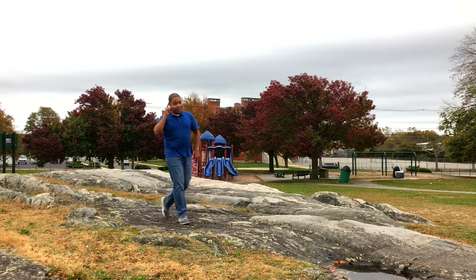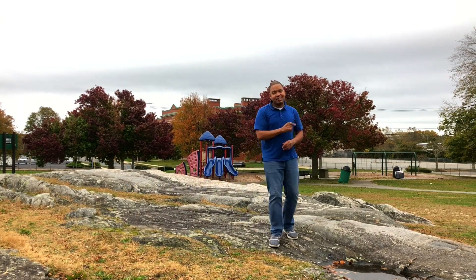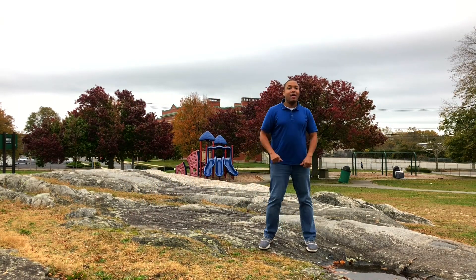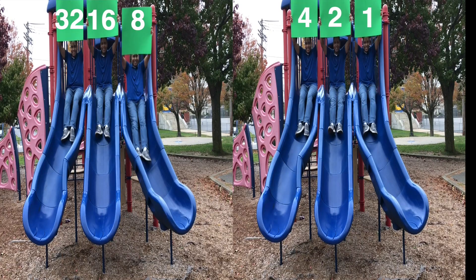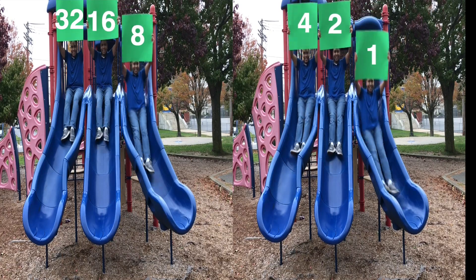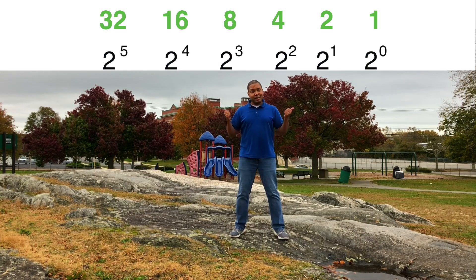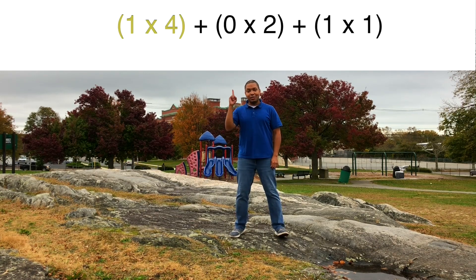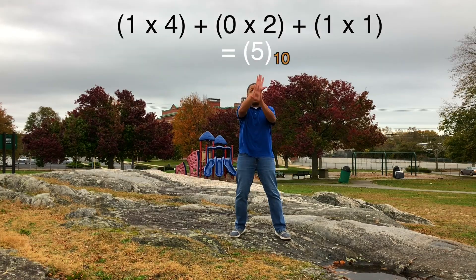Listen really closely, here's the key to truly understand me: the places in base 2 are 1, 2, 4, 8, 16, 32. This is because the powers of 2 equal those values. And as we said in the past, make it do what it do: 1 times 4 plus 0 times 2 plus 1 times 1 equals 5 in base 10.